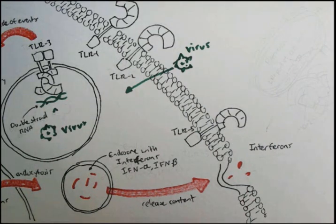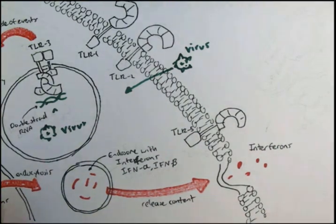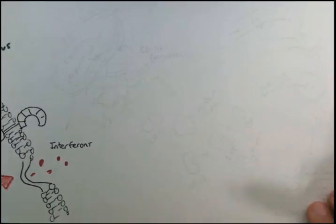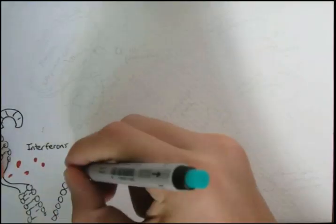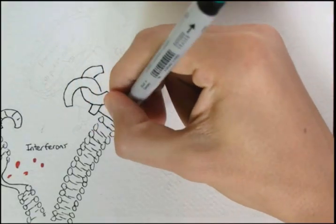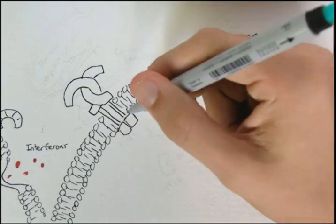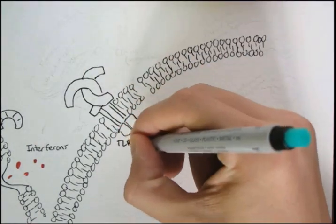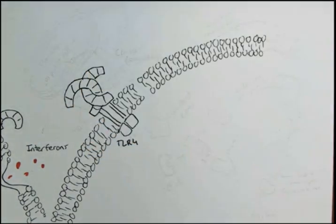So that was how the endosomal TLRs work. Now let's look at how the TLR4 works, which is important because these are the main pathogen recognition receptors on the macrophages. And it works a bit more, it's a bit more complex than the others. Well, not really, it's just got a couple of added extras.